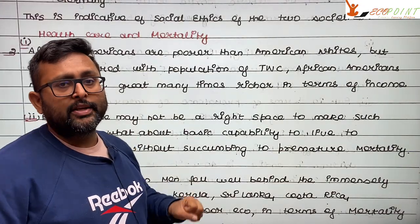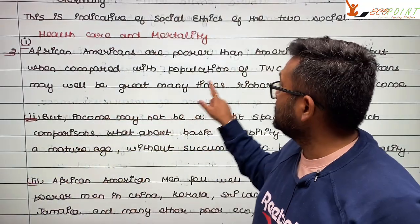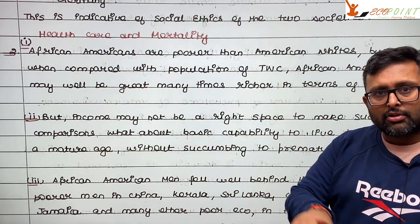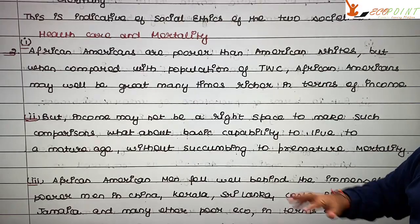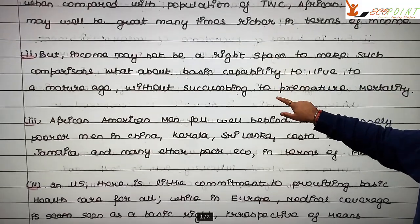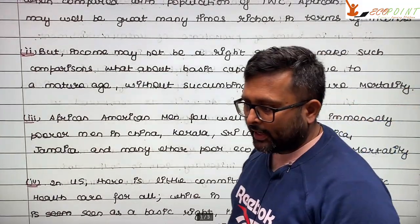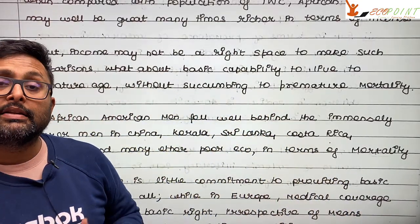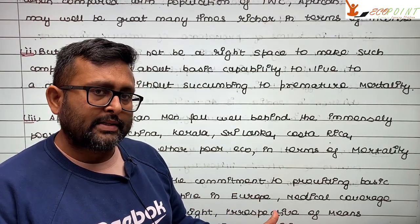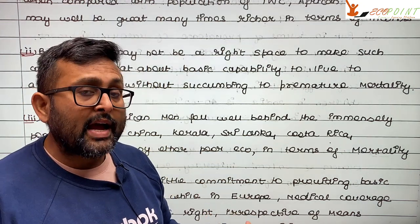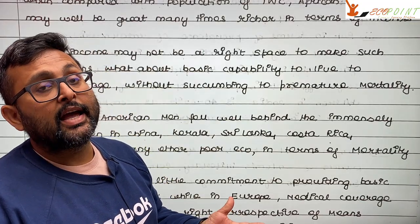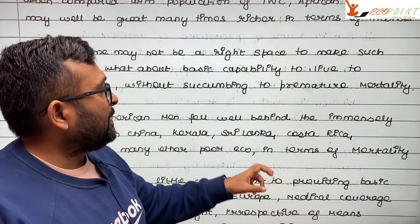But if you look at a certain American population and compare it to third world countries, African-Americans will be richer in income. However, Sen says don't just look at income as the only way to make comparisons. You also have to look at other inequalities, because African-Americans may have more income than poor people in India, yet some Indian states and sub-Saharan African countries have lesser mortality than African-Americans.